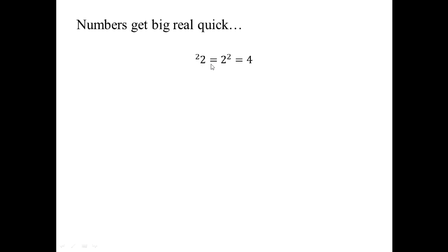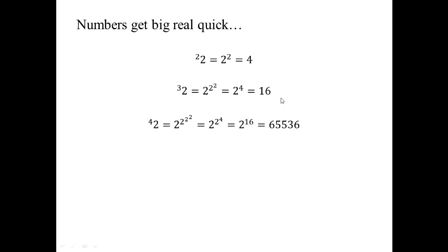One interesting feature of tetration is that numbers get very big very quickly. Taking the number 2 tetrated twice: that's just 2 squared, which is 4. Tetrated three times: 4 becomes the new exponent, so 2 to the fourth is 16. Tetrated four times: 2 to the sixteenth is 65,536. So this is looking pretty bad pretty quickly.